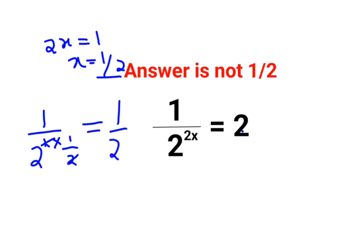Now please understand here when you have 1 upon a raised to n can be written as a raised to minus n. Okay so here I can write this as 1 upon 2 raised to 2x as nothing but 2 raised to minus 2x equals 2.